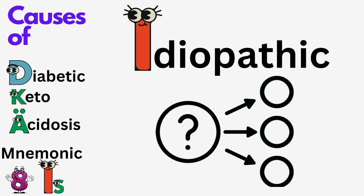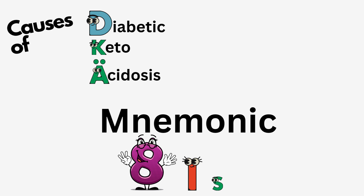8. Idiopathic. In some cases, no specific cause can be identified for DKA. It's important to note that these same causes can also act as precipitants for hyperosmolar hyperglycemic state, HHS. This mnemonic can help healthcare professionals quickly recall the potential triggers when assessing and managing patients with DKA or HHS.